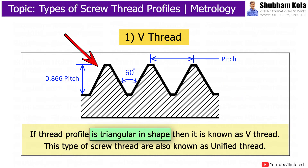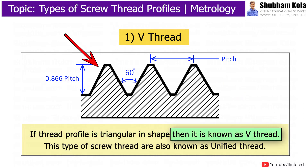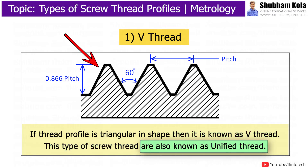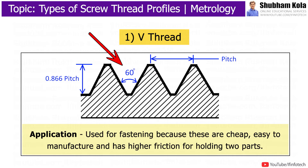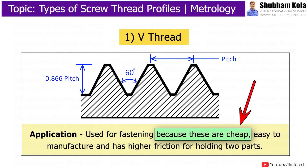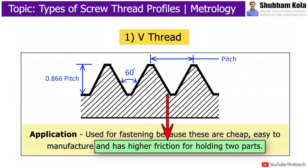If the thread profile is triangular in shape, it is known as a V-thread. These types of screw threads are also known as Unified Thread. They have a 60-degree thread angle and are used for fastening because these types of threads are cheap, easy to manufacture, and have higher friction for holding two parts together.